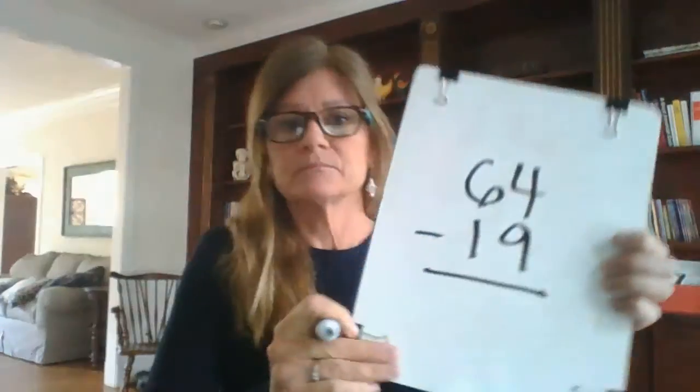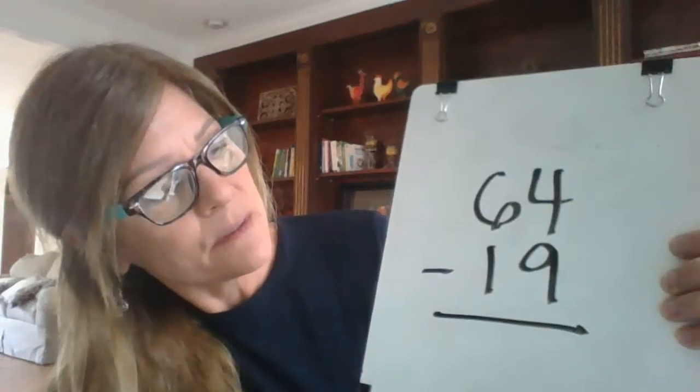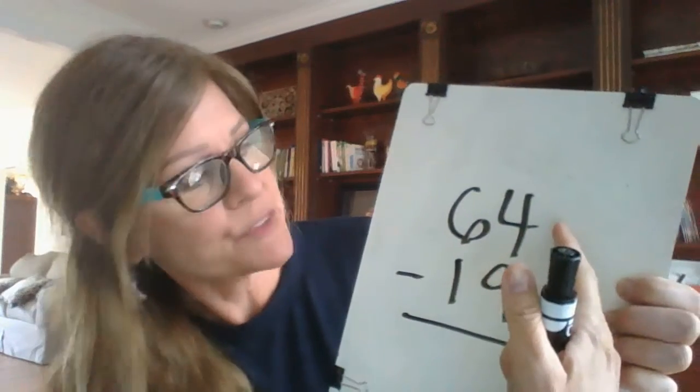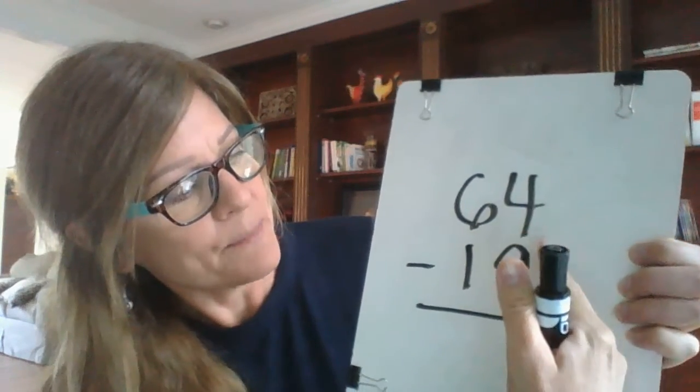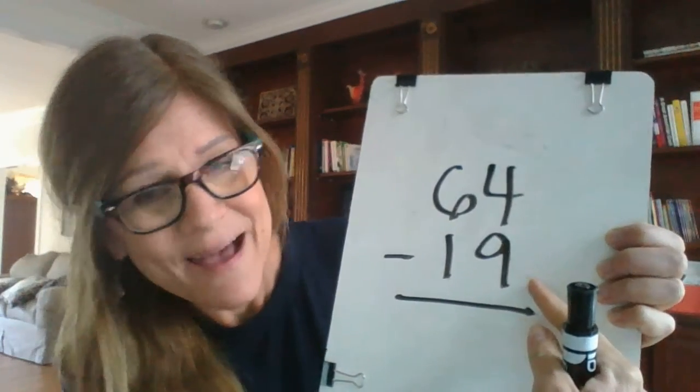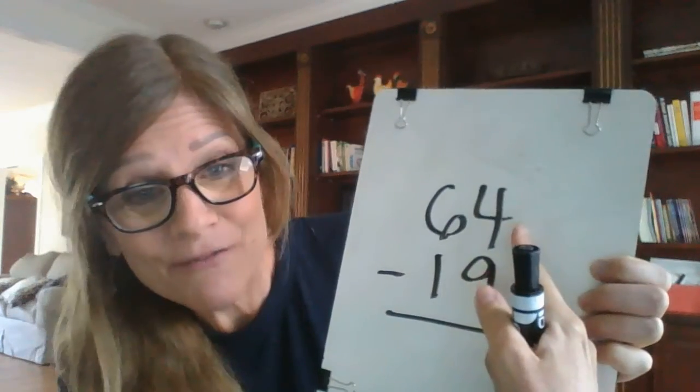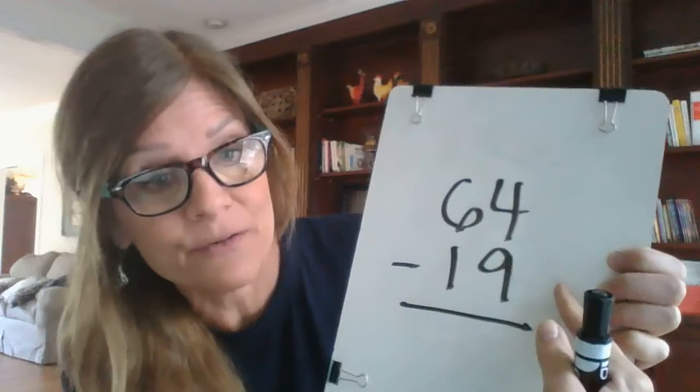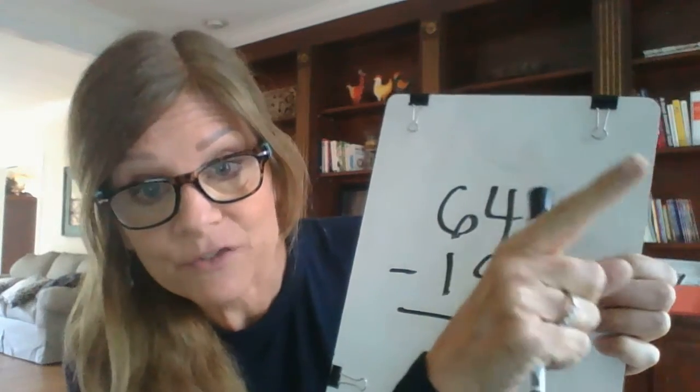Okay, now we're going to try a few that require regrouping. 64 minus 19. Again, we always start in the ones column and we always start at the top. 4 minus 9. I can't do that. If I only have 4, I can't take 9 away. There's not enough. 9 is greater than 4. That's when I have to regroup.